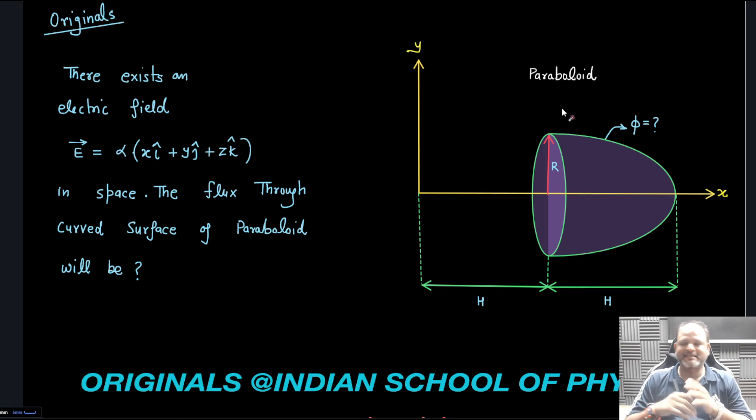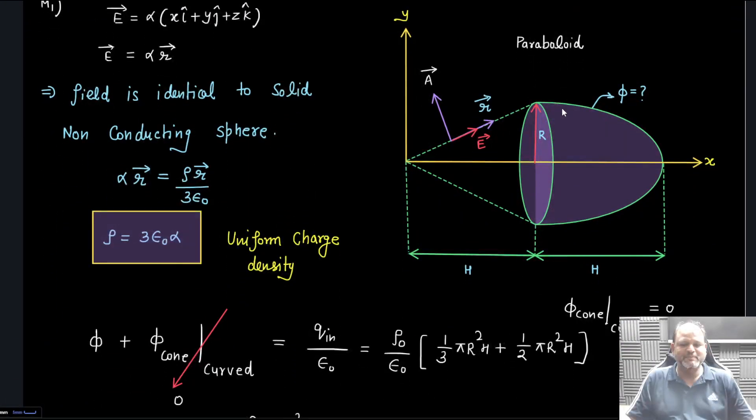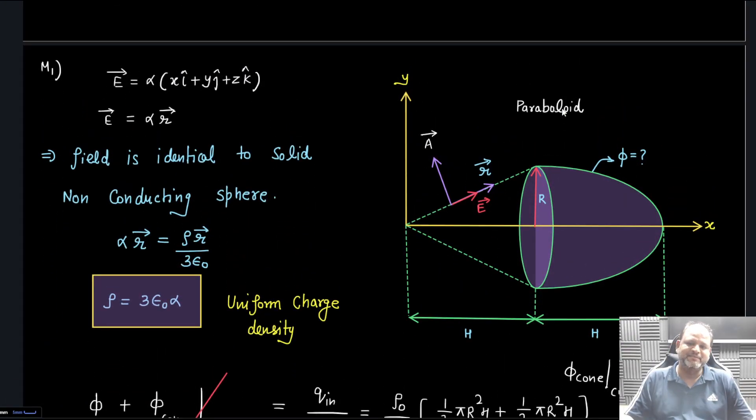Let's start this question. First part is when you look at this field, it is like α r⃗. There are two methods - first method is the best method I feel and it was such a nice approach.